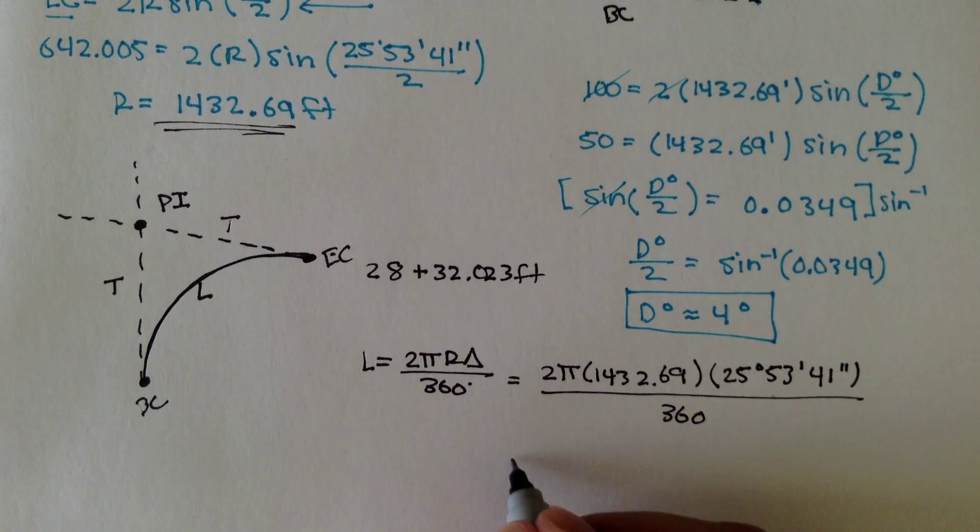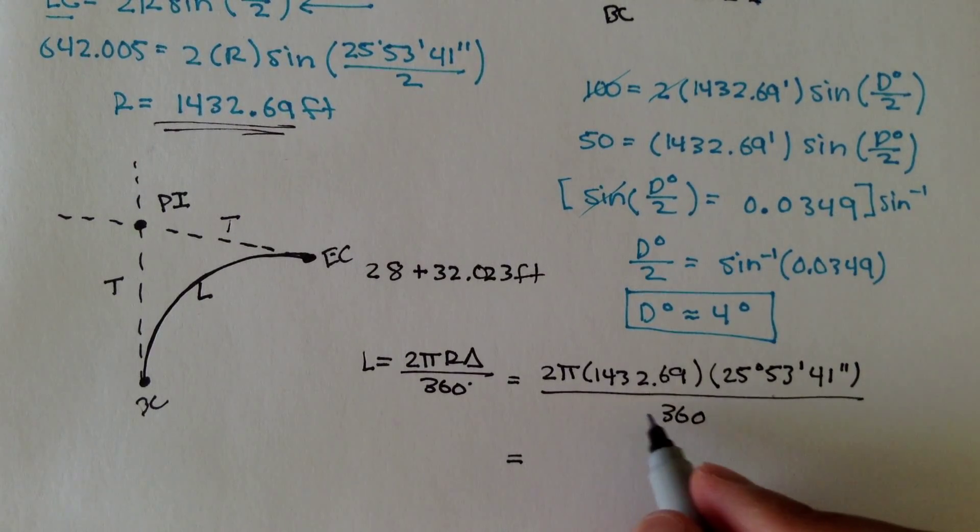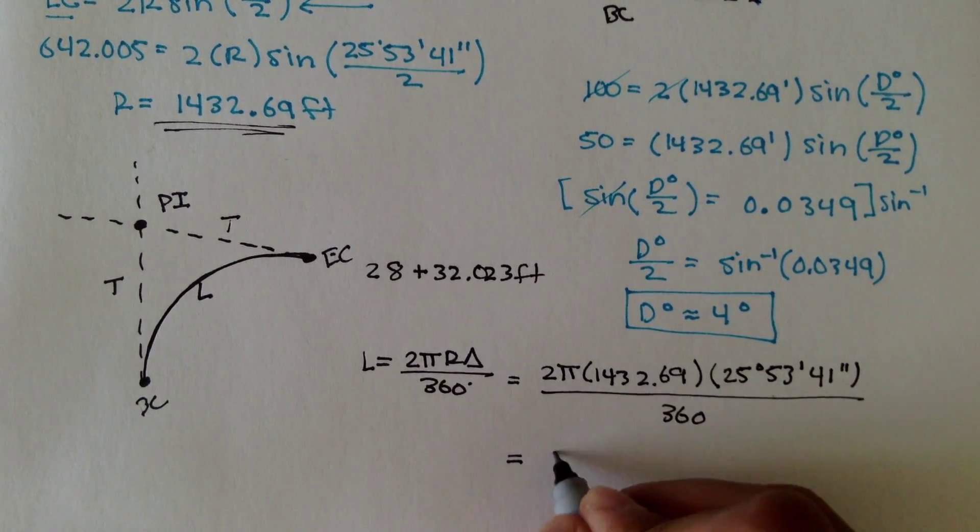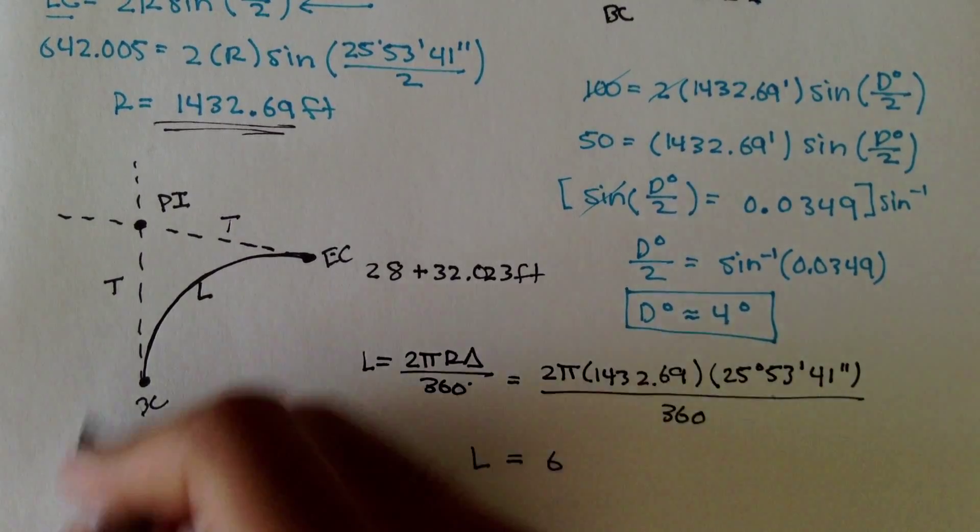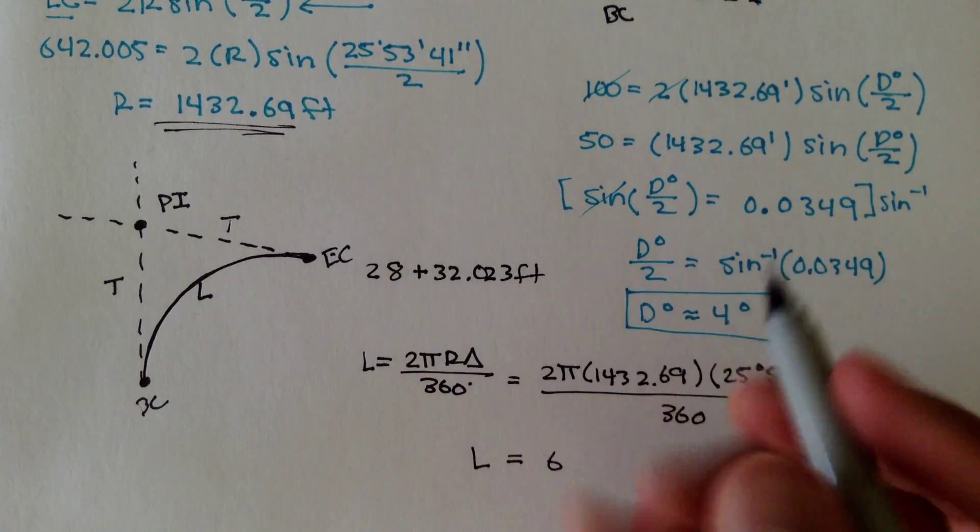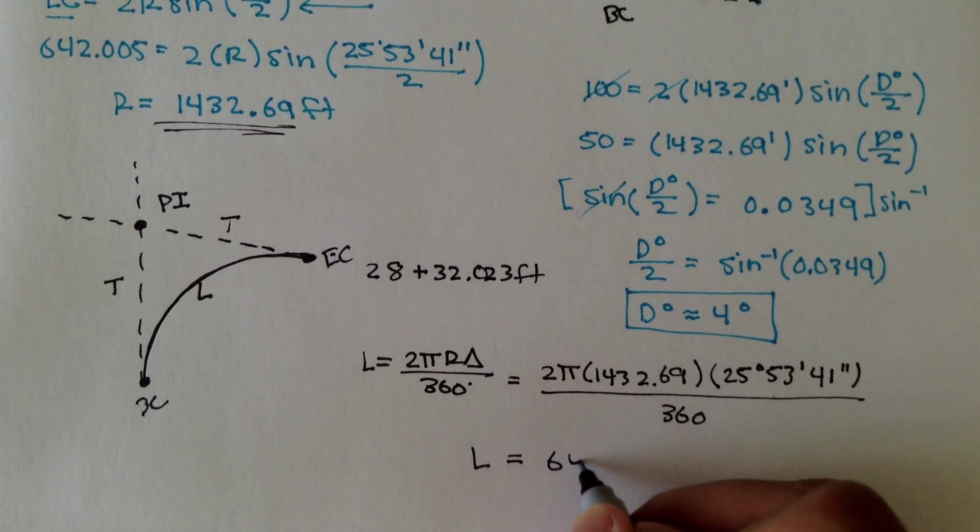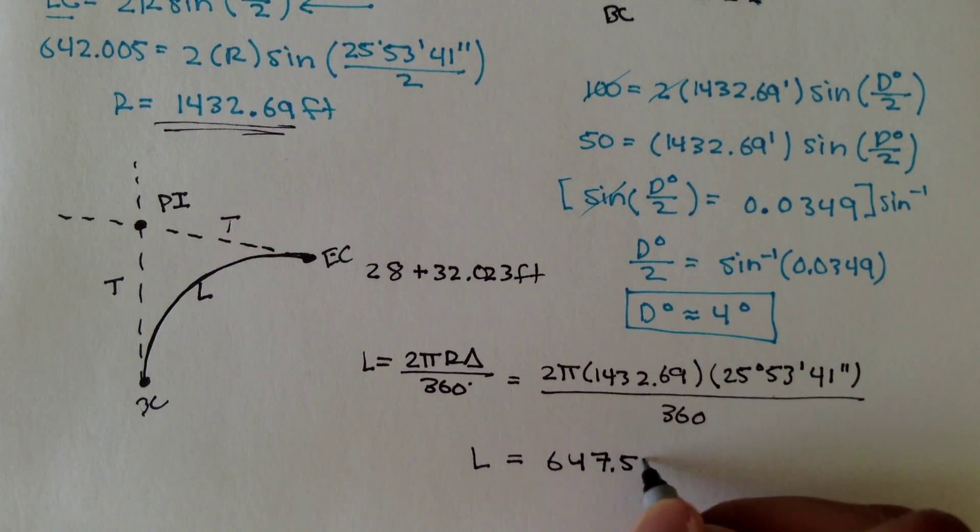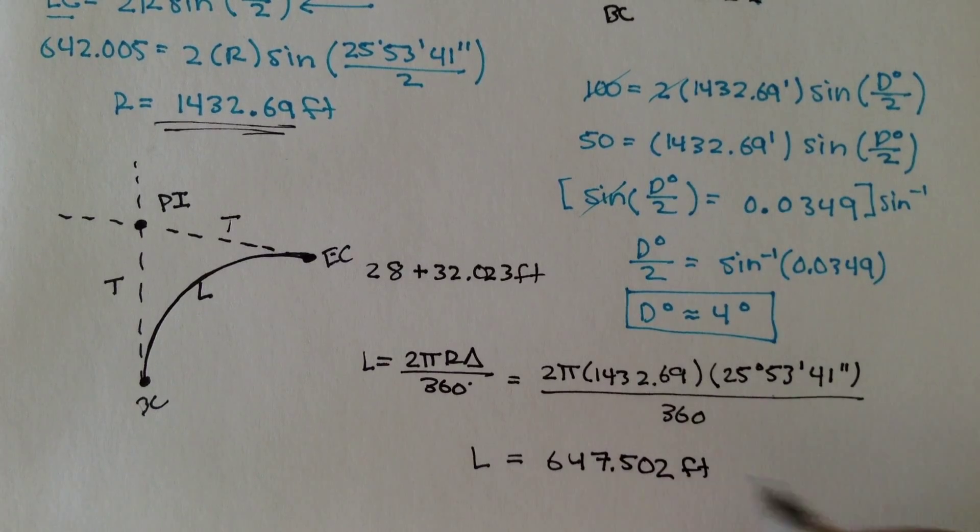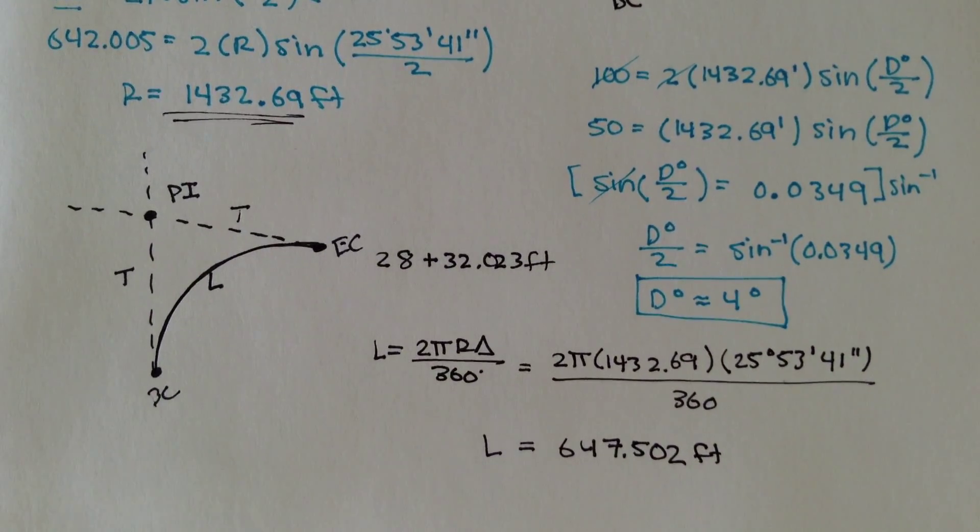And all of this is divided by 360. And if you do the math, multiply all this out, divided by 360, you get the length, so the distance from BC to EC along the curve is equal to 647.502 feet.